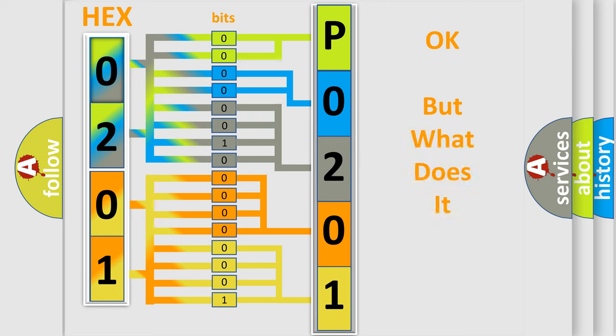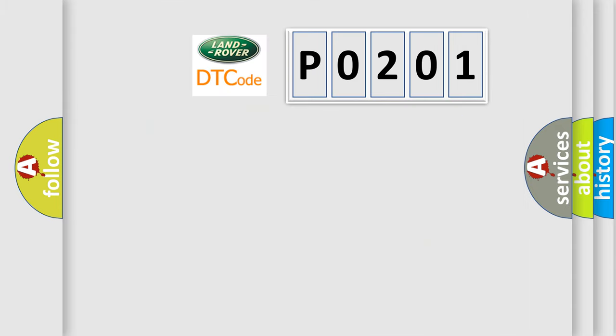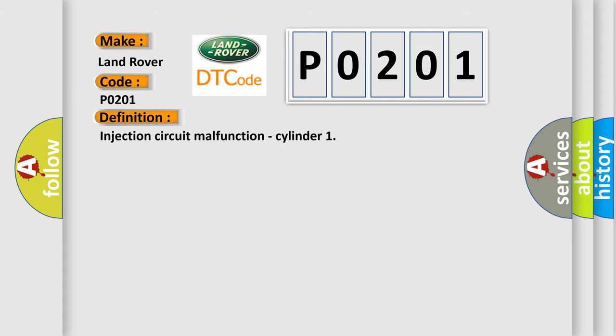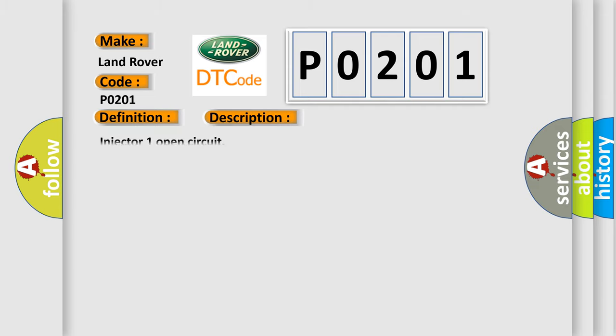The number itself does not make sense to us if we cannot assign information about what it actually expresses. So, what does the Diagnostic Trouble Code P0201 interpret specifically for Land Rover car manufacturers? The basic definition is: Injection circuit malfunction, cylinder 1. And here is a short description of this DTC code: Injector 1 open circuit. The Airbag Reset website aims to provide information in 52 languages.